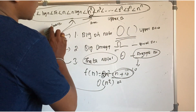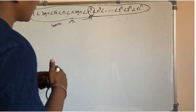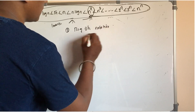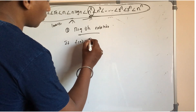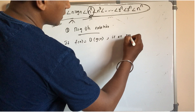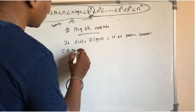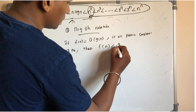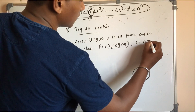Now let's explain the individual notation. For big O notation: if f(n) is equal to O(g(n)), then for all positive constants c and n₀, f(n) is less than or equal to c into g(n), for n greater than or equal to n₀.